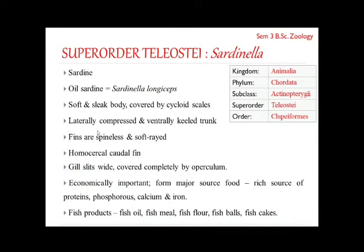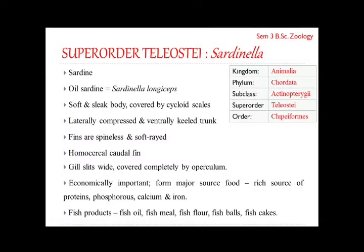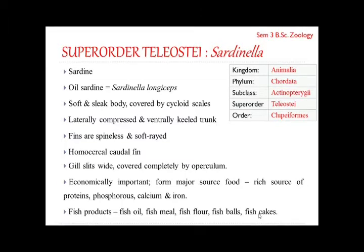Now we will see two examples under super-order diversity: Sardinella and Vastariga. Sardinella — the systematic position is super-class Actinopterygii, sub-class Actinucheregi, super-order diversity, order Clupetons.